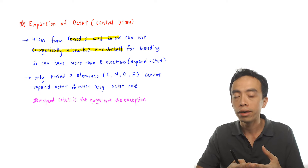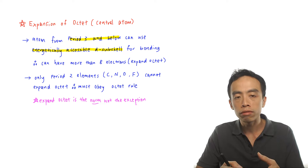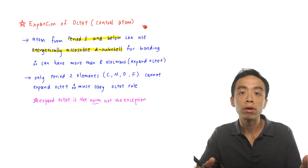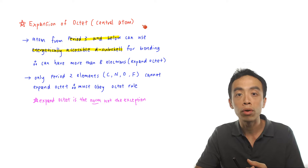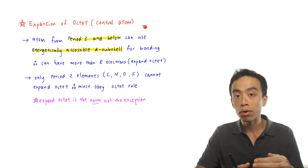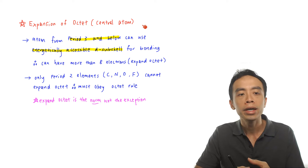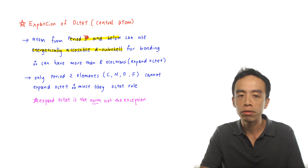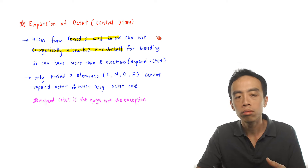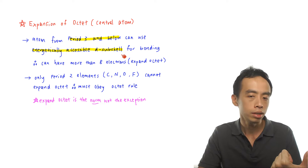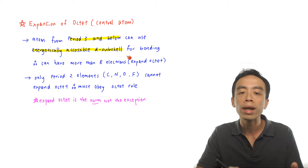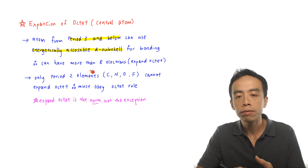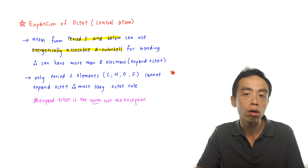Let us first consider which elements can expand octet. Expansion of octet usually applies to the central atom when we are drawing the dot and cross diagram, because the central atom tends to form more bonds than the surrounding atoms, so they will have more electrons around the valence shell. Atoms from period 3 and below can actually expand octet because they can make use of their energetically accessible d-subshell, or low-lying d-subshell, for bonding. So therefore they can hold more than 8 electrons around the valence shell.